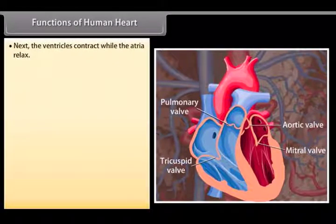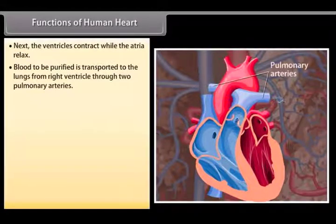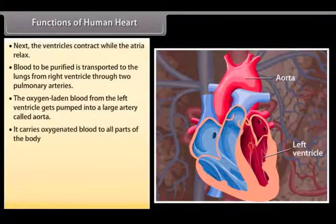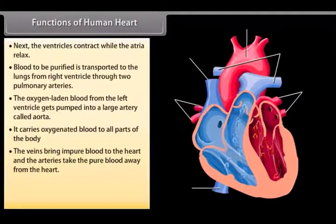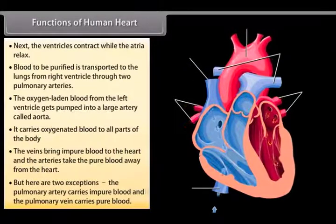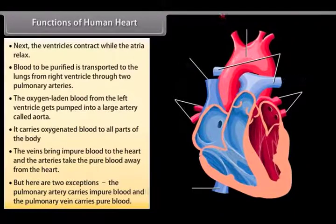Next, the ventricles contract while the atria relax. Blood to be purified is transported to the lungs from right ventricle through two pulmonary arteries. The oxygen laden blood from the left ventricle gets pumped into a large artery called aorta. It carries oxygenated blood to all parts of the body. The veins bring impure blood to the heart and the arteries take the pure blood away from the heart. But there are two exceptions. The pulmonary artery carries impure blood and the pulmonary vein carries pure blood.